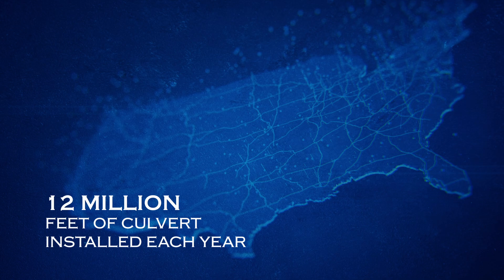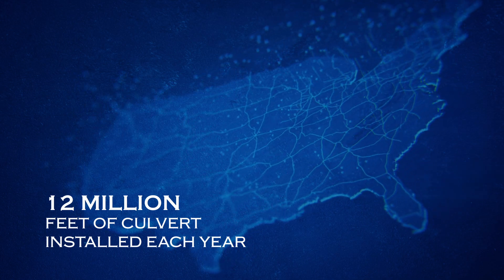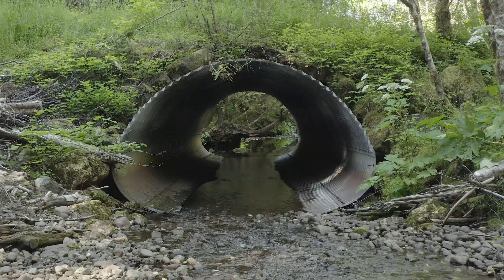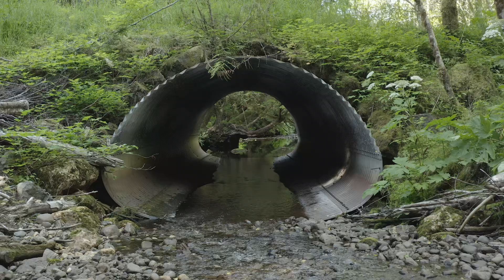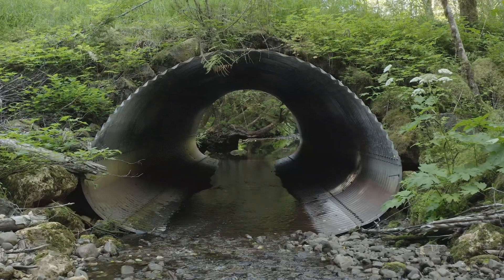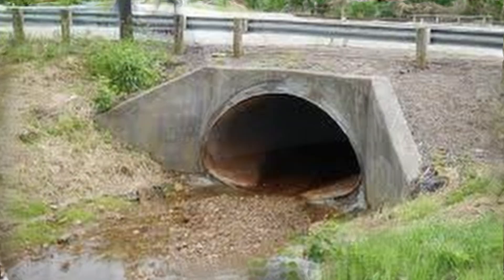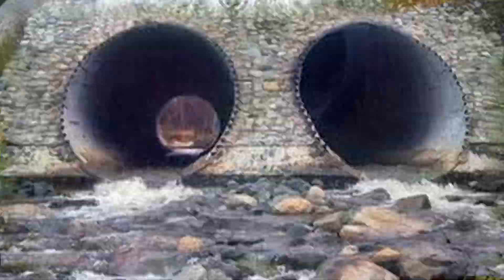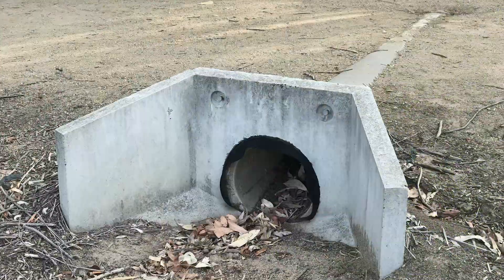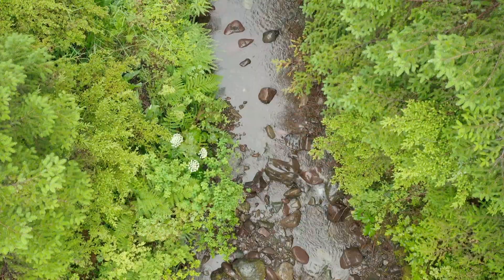For generations, we've been building these culverts with one simple goal: move water from one side of the road to the other as cheaply and efficiently as possible. In practice, this looks like building a rigid metal, plastic, or concrete corridor directly in the middle of an ever-changing and dynamic stream.